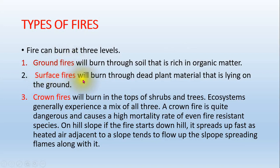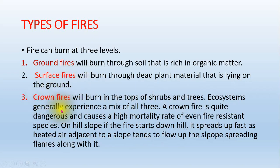Surface fire burns through dead plant material lying on the ground. The third type — crown fire — is the most dangerous; it burns in the tops of shrubs and trees. Ecosystems generally experience a mix of all three. Crown fire causes a high mortality rate even among fire-resistant species, as its flames can reach tree tops and severely damage or kill them.